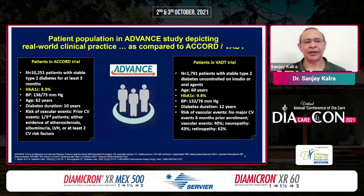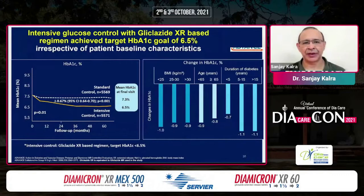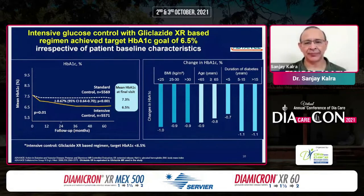ADVANCE did differ from ACCORD and VADT. In ACCORD and VADT, the average age of the participant was more and the average HbA1c was higher. In ADVANCE, a gliclazide XR-based regimen was used and the target HbA1c was 6.5. The researchers were able to achieve and maintain this HbA1c over 5 years. Getting an HbA1c of 6.5 and maintaining it for 5 years is very difficult in clinical practice, but they did it. They showed that irrespective of body mass index, age, or HbA1c at onset, the results were the same — gliclazide XR helped achieve good HbA1c.